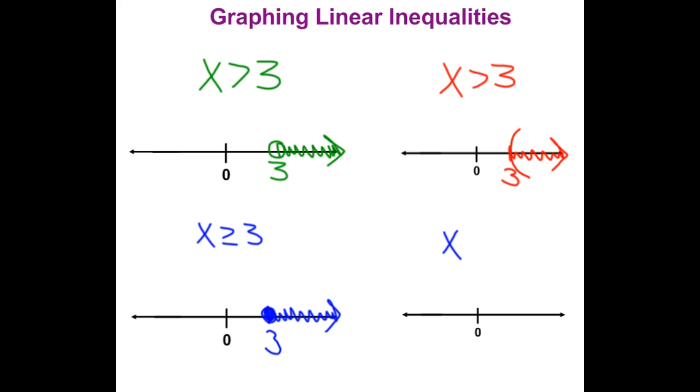And if we wanted to do it this way, instead of a parenthesis, we would use a square bracket. A square bracket means include the value, and then everything to the right. So you have a choice when you're shading inequalities. You can use the open circle, closed circle idea, or you can use the parenthesis square bracket idea.